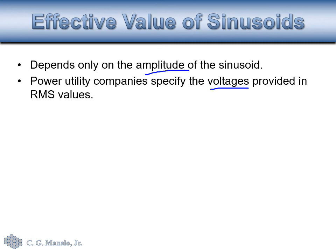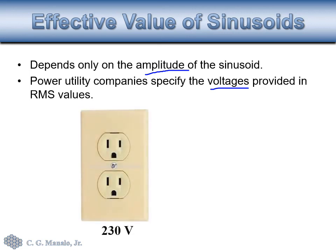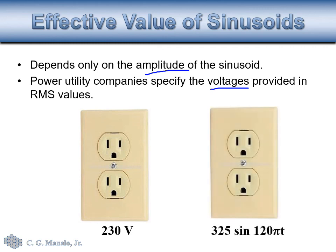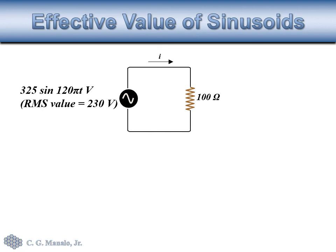Our utilities specify voltages by their RMS value. For example, in our homes we see an outlet labeled 230 volts — that label refers to the RMS value, so the more appropriate full labeling would indicate it is 230 volts RMS.